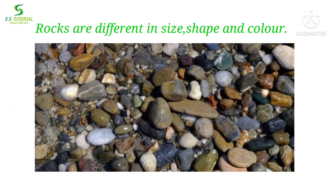If we see different rocks then we obviously find that no two rocks are exactly similar. They have different size, shape and color. Some of them might be the reason of chemical weathering. Let's know about chemical weathering.